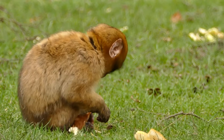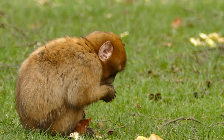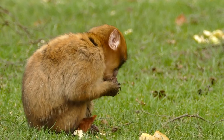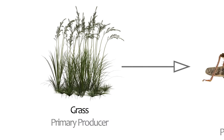A food chain shows what eats what in a simple path. I'll show an example on screen and walk you through it. First we always have our primary producer, which is typically a plant. A primary producer is an organism that does not consume another organism and instead lives off of sunlight or chemicals, but in most cases sunlight. In our example, our primary producer is a patch of grass.